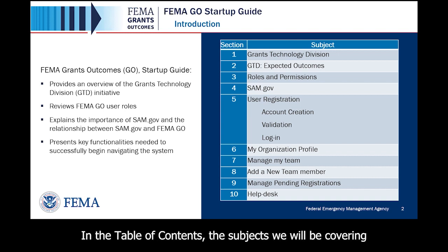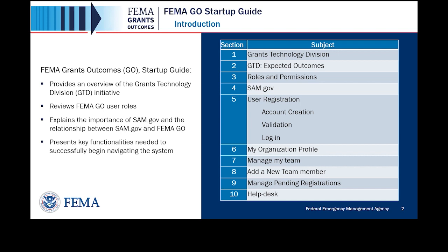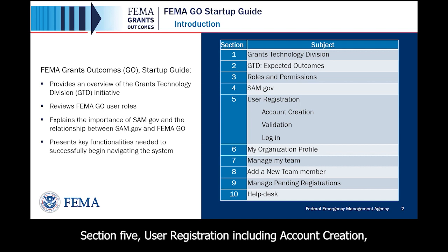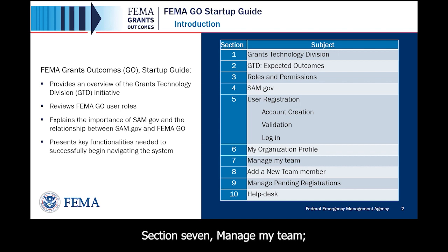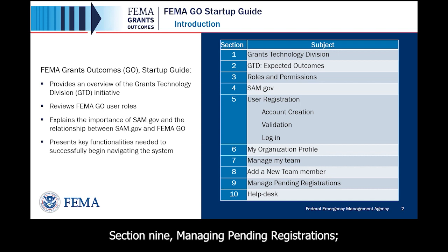In the Table of Contents, the subjects we will be covering include: Section 1, Grants Technology Division; Section 2, GTD's Expected Outcomes; Section 3, Roles and Permissions; Section 4, SAM.gov; Section 5, User Registration, including Account Creation, Validation, and Logging In; Section 6, My Organization Profile; Section 7, Manage My Team; Section 8, Adding a New Team Member; Section 9, Managing Pending Registrations; and Section 10, Help Desk Information.